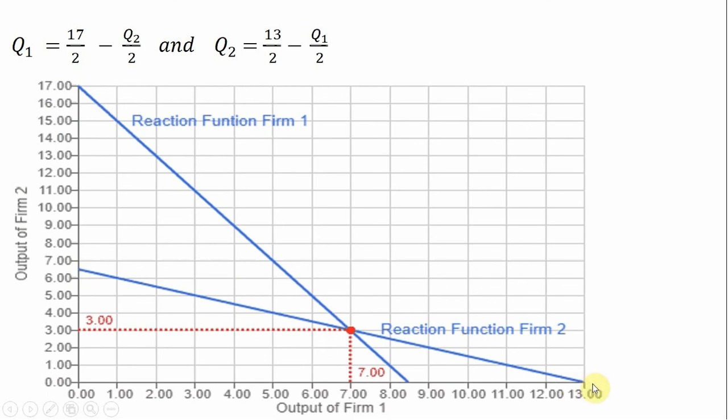Likewise, if we're going to get the horizontal intercept, we're going to set the left-hand side equal to 0. So setting Q₂ equal to 0 and solving for Q₁, we get 13. So that's where the 13 is coming from.